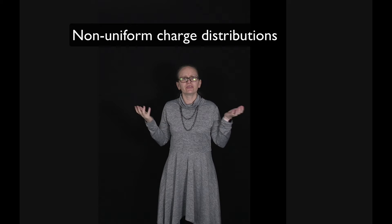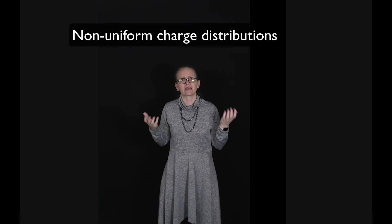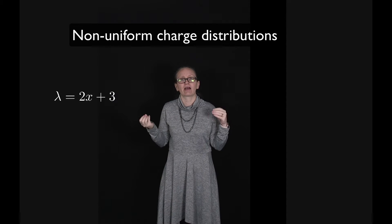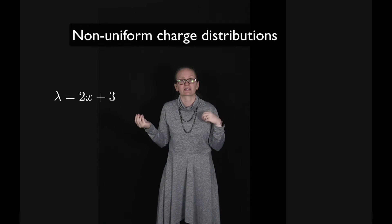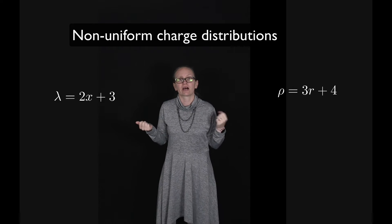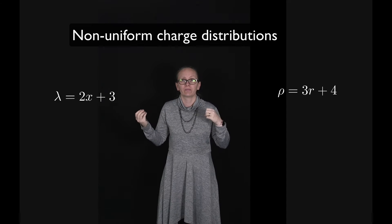We've had a look at uniform charge distributions, but what about non-uniform ones? For example, a linear charge density described by lambda equal to 2x plus 3, or a volume charge density described by rho equal to 3r plus 4.